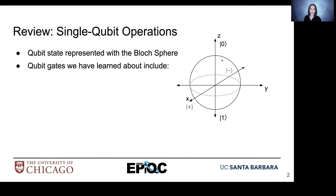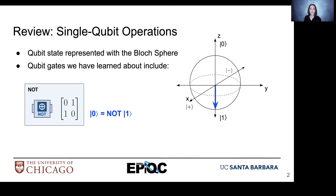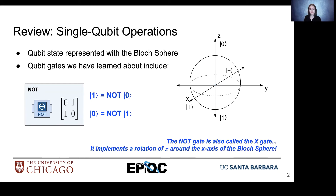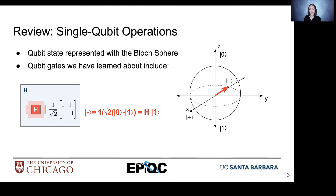A qubit state represents a point on the Bloch sphere. The NOT gate takes a state and rotates it around the x-axis of the Bloch sphere — that rotation is a rotation of pi, or 180 degrees. The H gate, our superposition gate, takes a qubit state and rotates it around the y-axis of the Bloch sphere, allowing us to start from ket0 and ket1 and end up in a state of equal superposition at either the plus state or the minus state respectively.